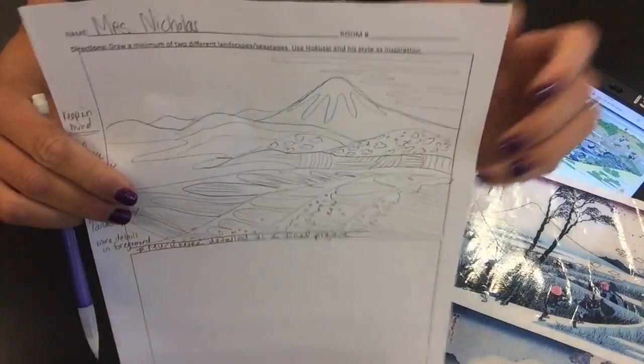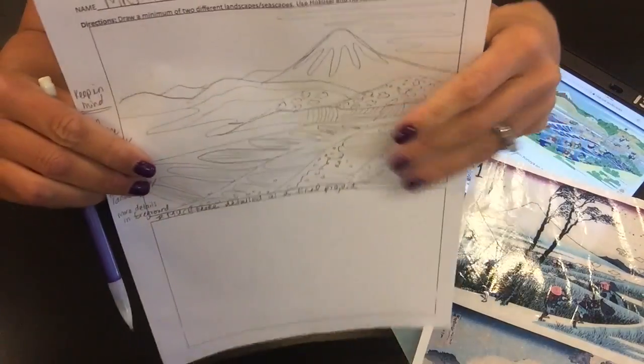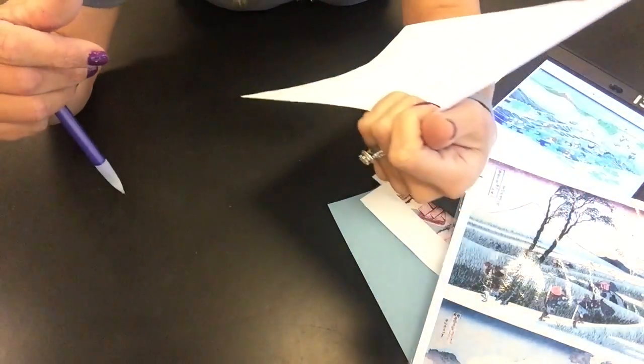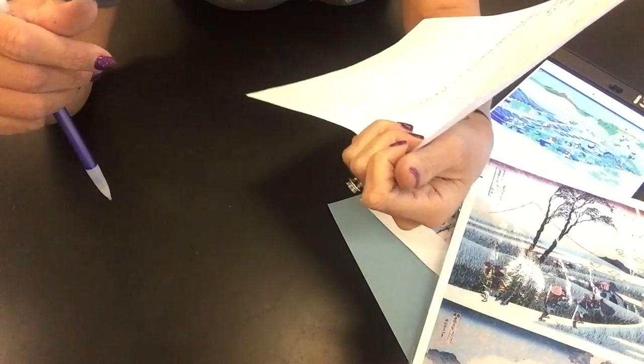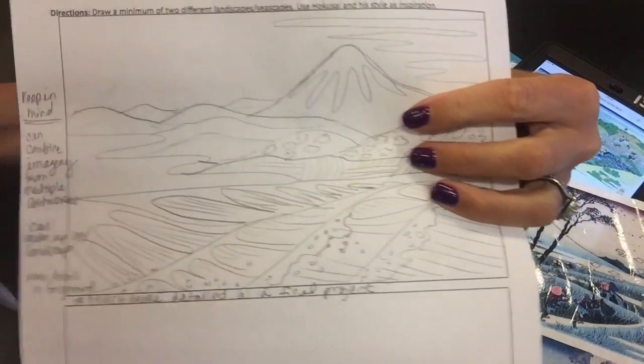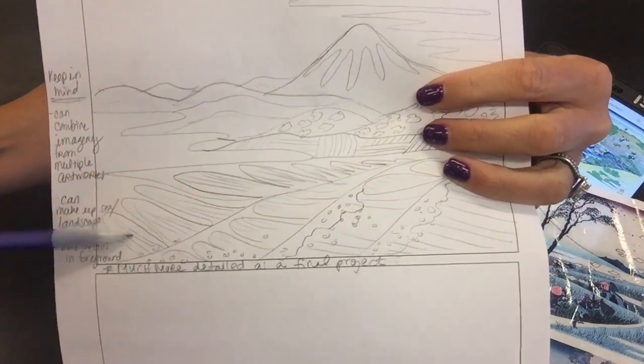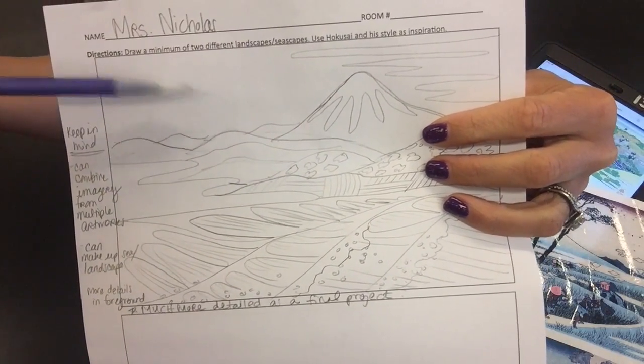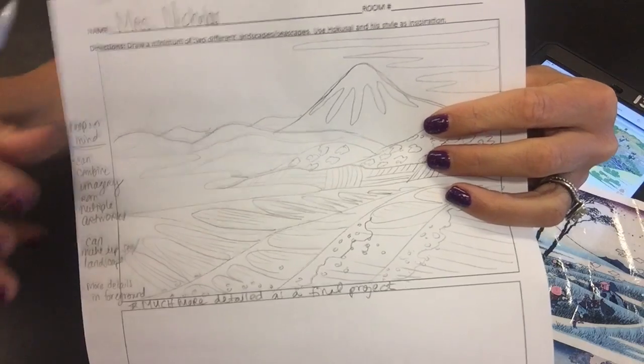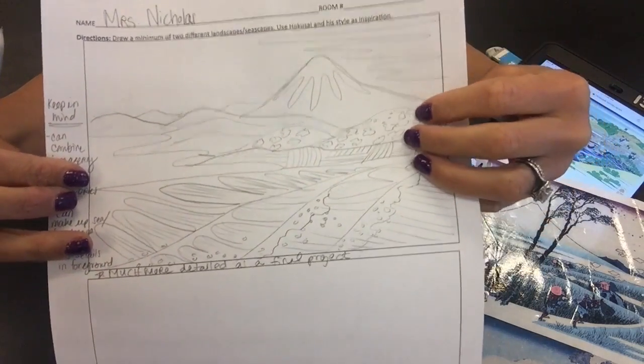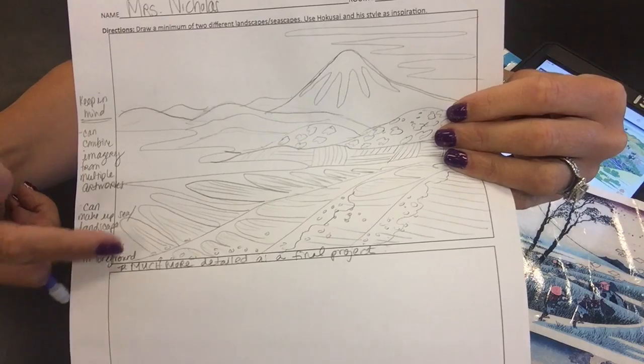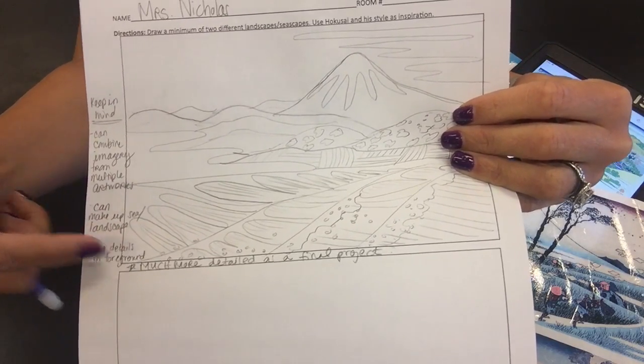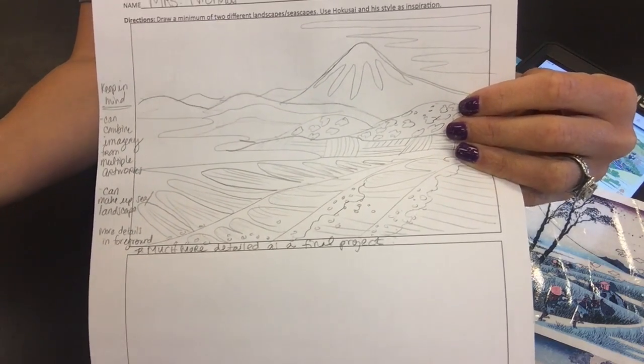But if you can think of something that you don't see, you're welcome to draw something totally different if you would like to. Also, in my foreground, I'm going to have more details than in my background, right? As things get further and further away, we're not going to be able to see as many details in the background, the middle ground and background as we would in the foreground, right? That's supposed to be closest to us. So we would see the most details there.